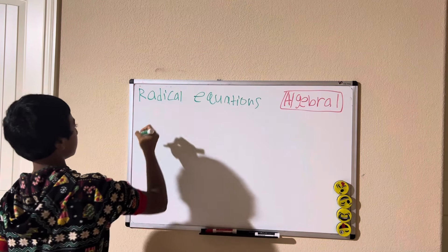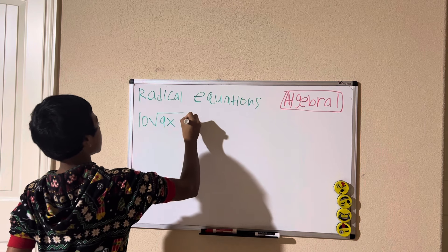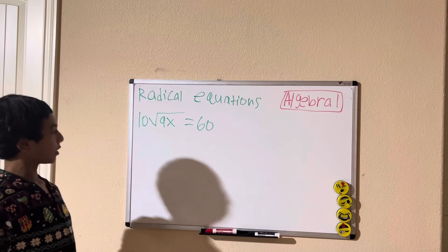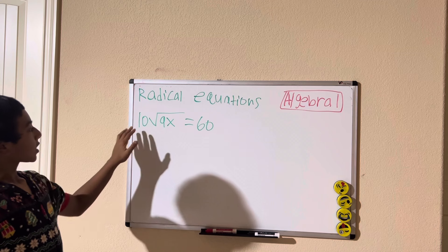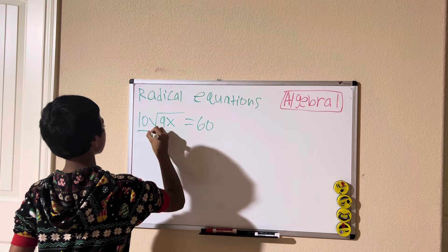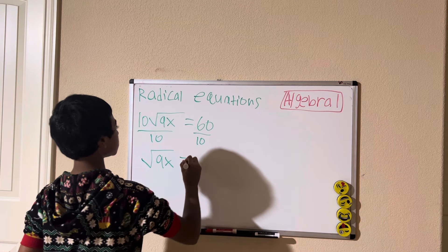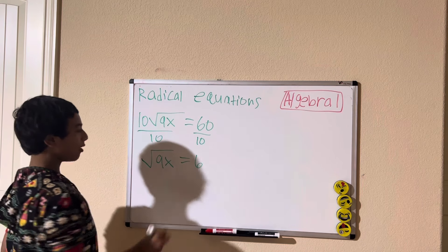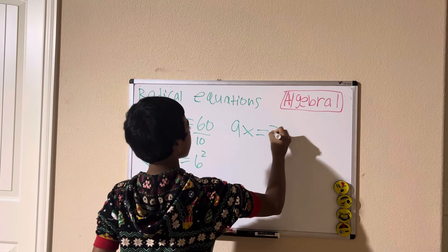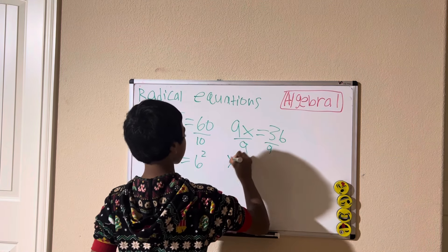Let's say we have 10 times the square root of 9x equals 60. Since the 10 is being multiplied to the square root, instead of squaring first we're going to divide both sides by 10, giving us the square root of 9x equals 6. Now I'm going to square both sides of the equation, giving us 9x equals 36, so x equals 4.